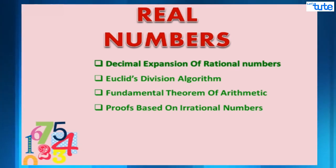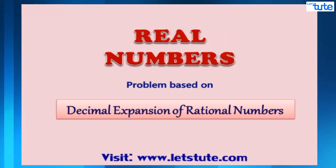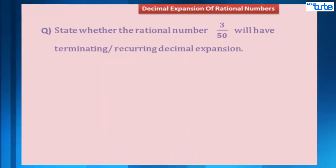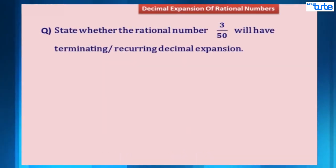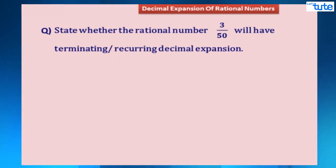Hi, in this session on real numbers we are going to solve a problem based on decimal expansion of rational numbers. Let us first read out the problem: state whether the rational number 3 upon 50 will have a terminating or recurring decimal expansion.